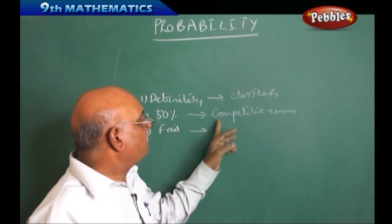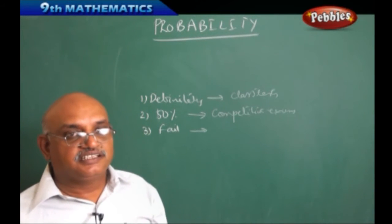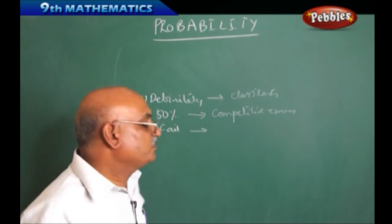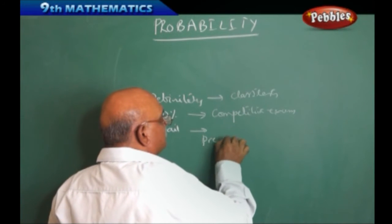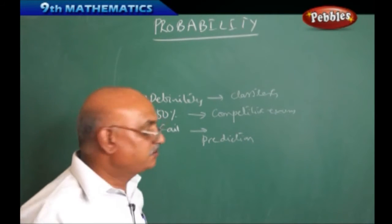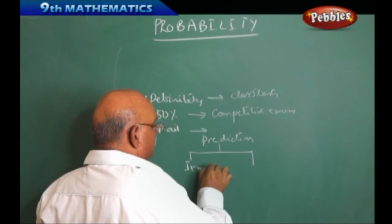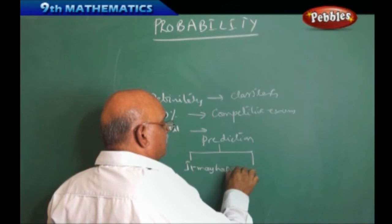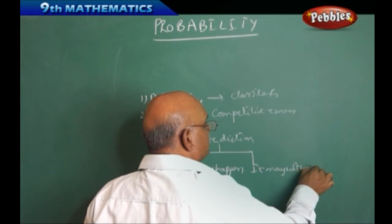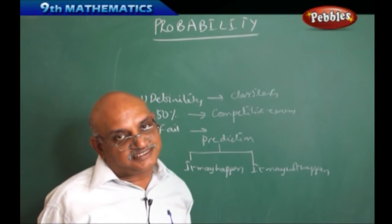Definitely the things may happen, may not happen. That is a competitive exam - there are only chances, only this much percentage of chances of happening the things. What is happening in complete probability is only the predictions. Prediction basically speaks about whether it may happen, it may not happen. There is a lot of differences there.